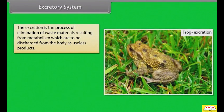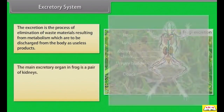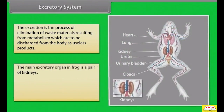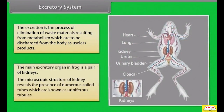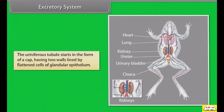Excretion is the process of elimination of waste materials resulting from metabolism. The main excretory organ in frog is a pair of kidneys. The microscopic structure of the kidney reveals the presence of numerous coiled tubes known as uriniferous tubules, which start in the form of a cap having two walls lined by flattened cells of granular epithelium.